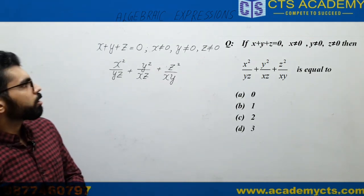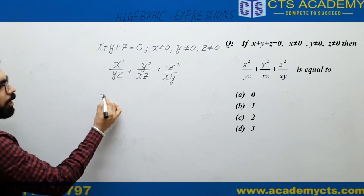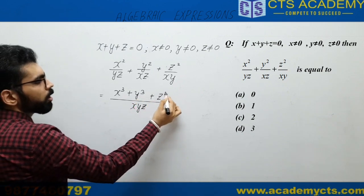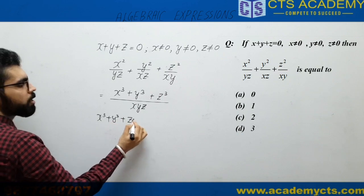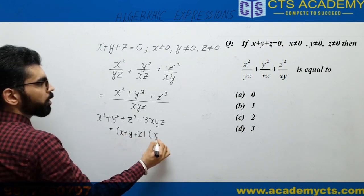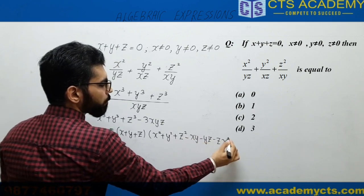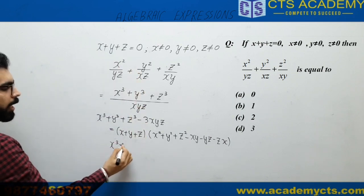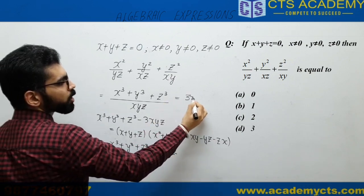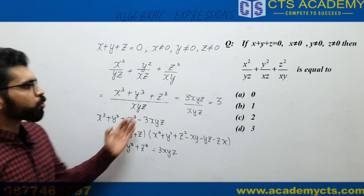One way of solving the question is if you have to solve this, we will have to use the algebraic identity. If we take the LCM xyz, we will get in the numerator x³ + y³ + z³. There's an identity that x³ + y³ + z³ - 3xyz is always equal to (x + y + z)(x² + y² + z² - xy - yz - zx). Here you are given x + y + z = 0. In that case, x³ + y³ + z³ will turn out to be 3xyz. If you substitute the value here, we get 3xyz/xyz. That means the answer comes out to be 3.